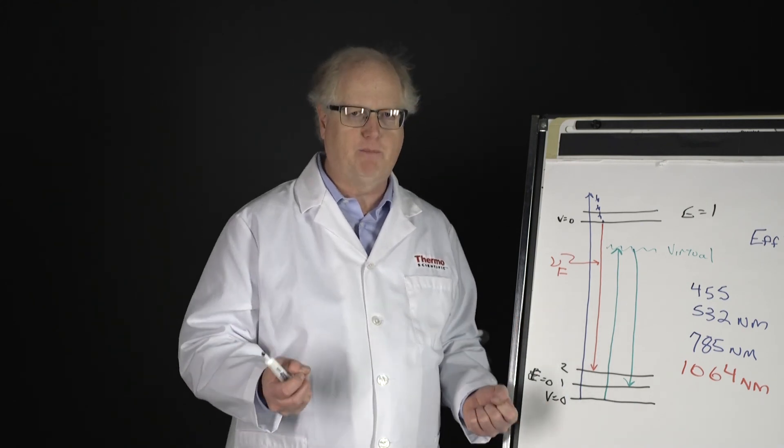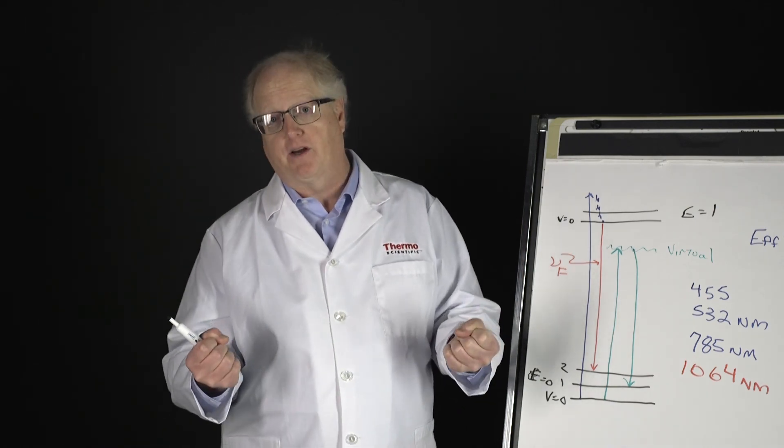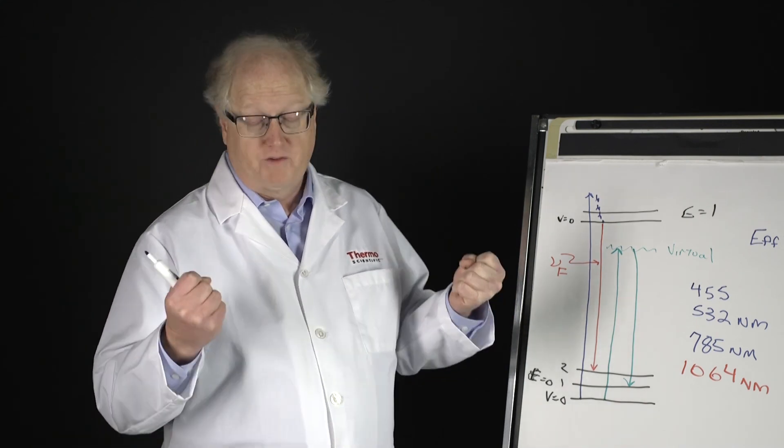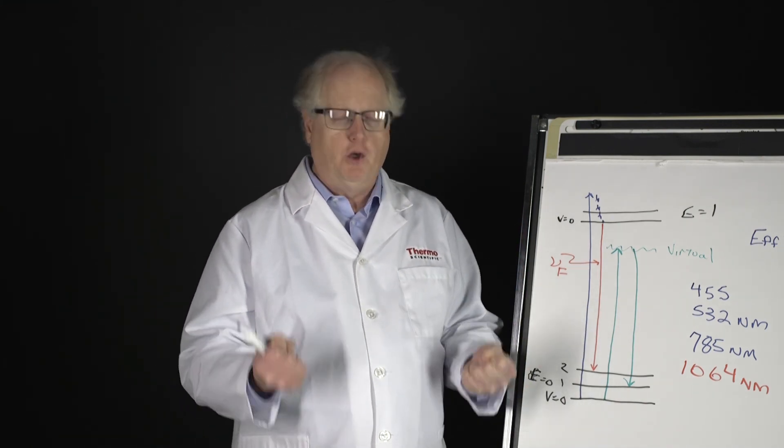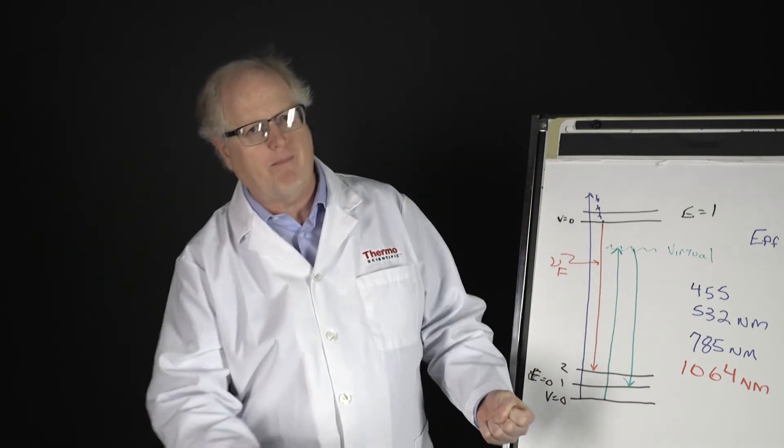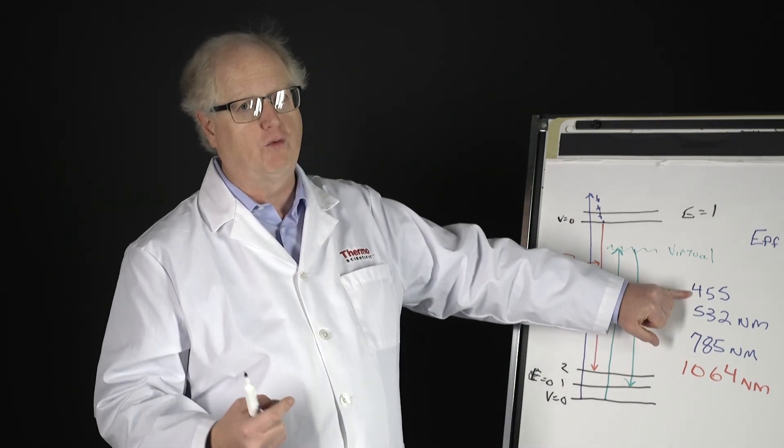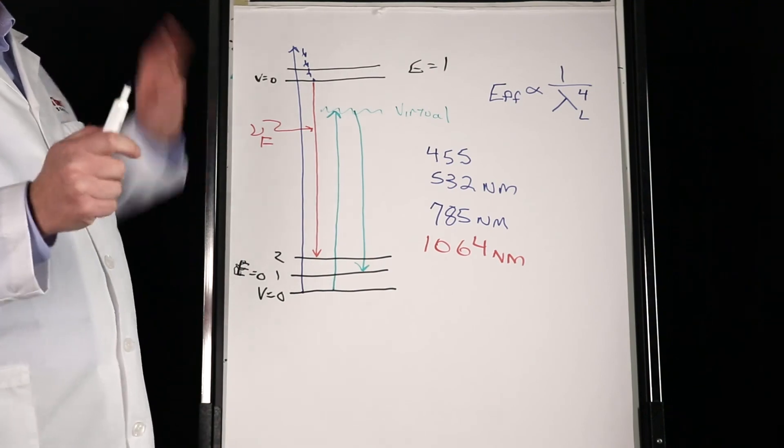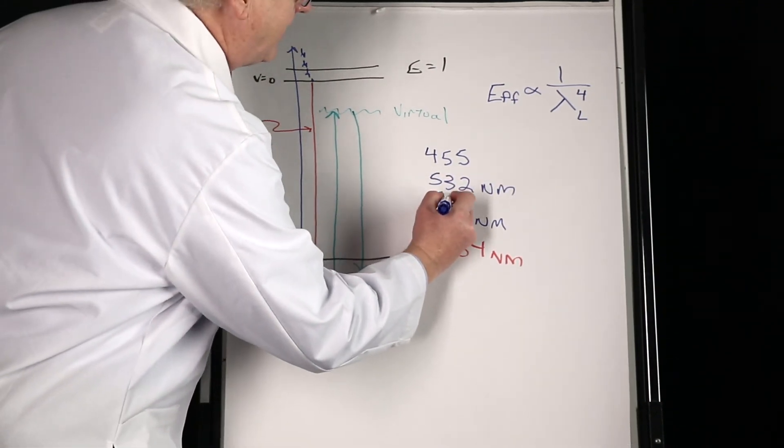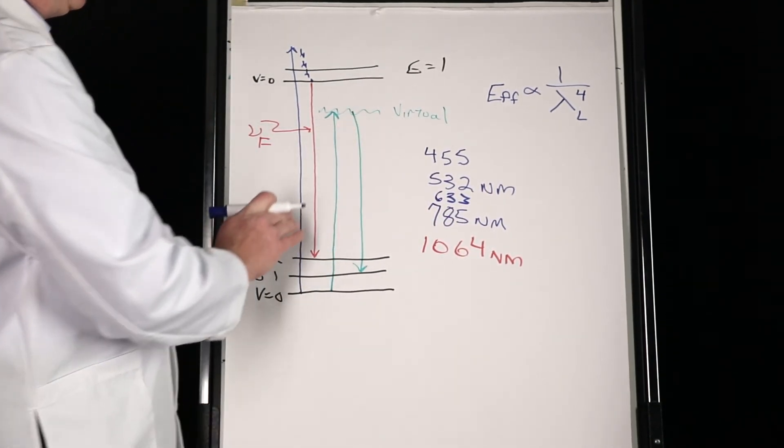And this is why on a system such as the Thermo Scientific DXR microscope, the Raman microscope, or Smart Raman, or the imaging microscope, you have the ability to easily interchange lasers. You can swap them in and out instead of just being stuck with one the whole time, because there may be some systems where 455 works brilliantly, and there are other cases where it doesn't work at all.